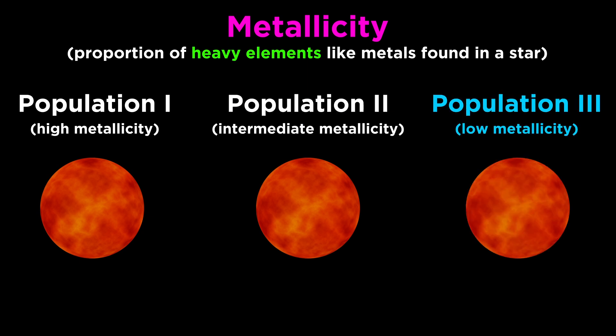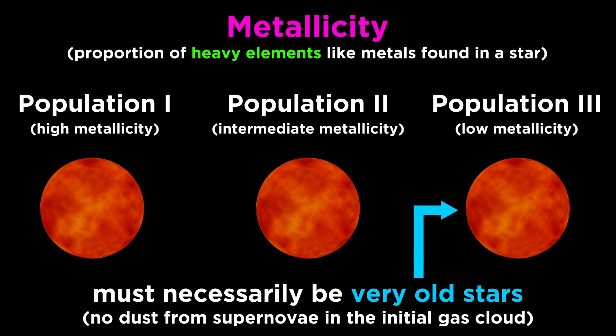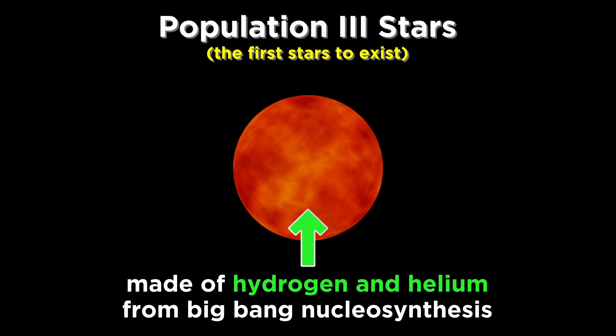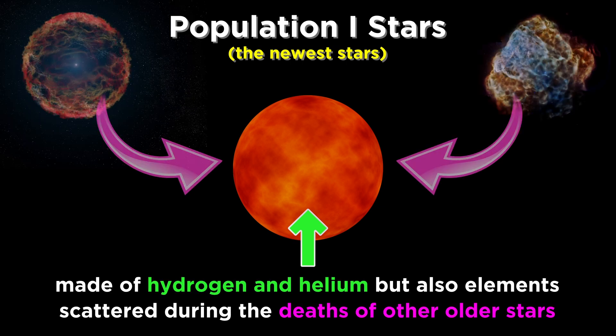We now understand that low metallicity means an older star, because heavy elements were not fused and dispersed into the interstellar medium until the first generation of stars died and scattered their ashes, so to speak. So the first stars, which formed entirely of the hydrogen and helium generated in early universe nucleosynthesis, are Population III stars, whereas Population I stars have formed much more recently, given the possibility of significant amounts of heavy elements being already present in the cloud of gas and dust that accumulated to form the star.